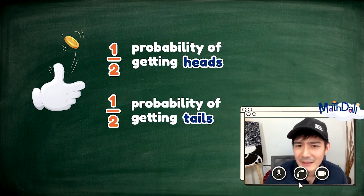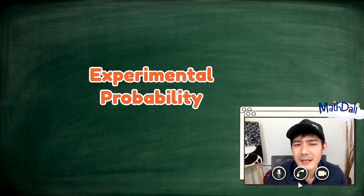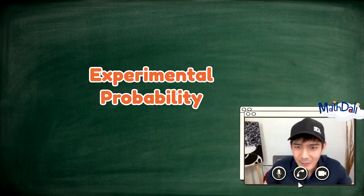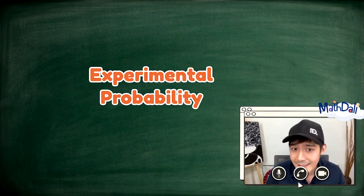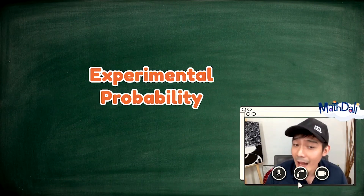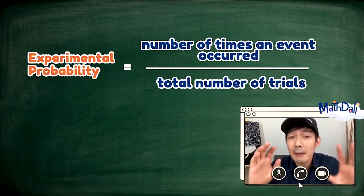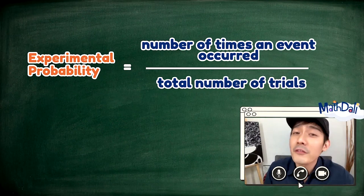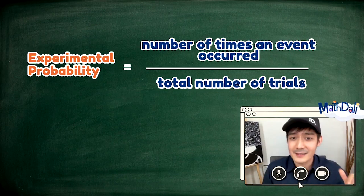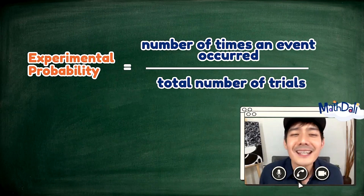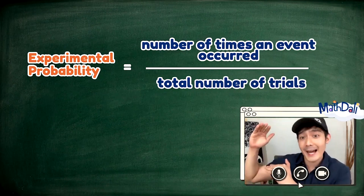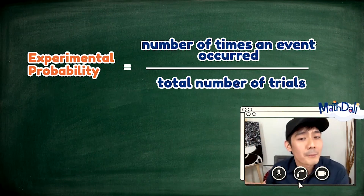Ano naman ang experimental probability? Experimental — ano man ginagawa sa isang experiment? Nag-e-experiment. Sinusubukan dito ang isang bagay. In this case, titignan natin kung ilang beses lalabas ang isang outcome from a number of trials. Experimental probability is the number of times an event occurred over the total number of trials.